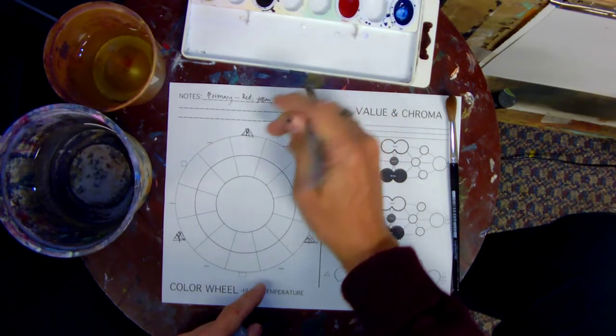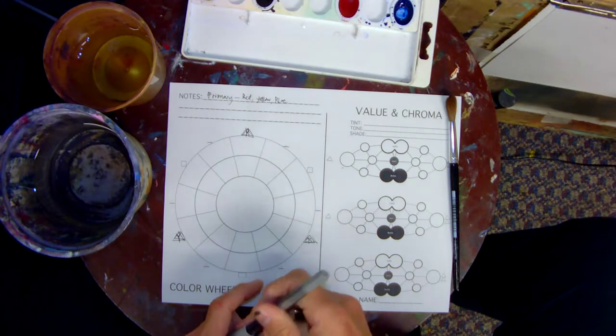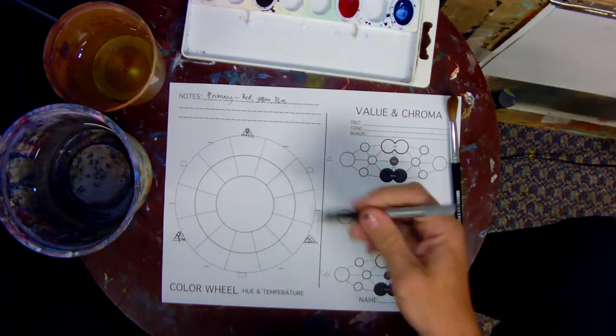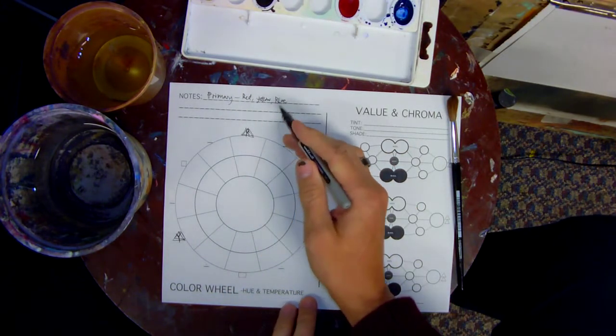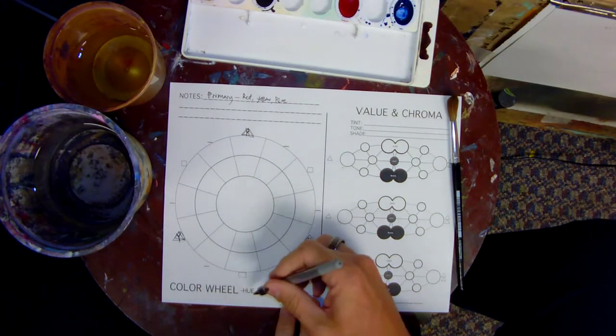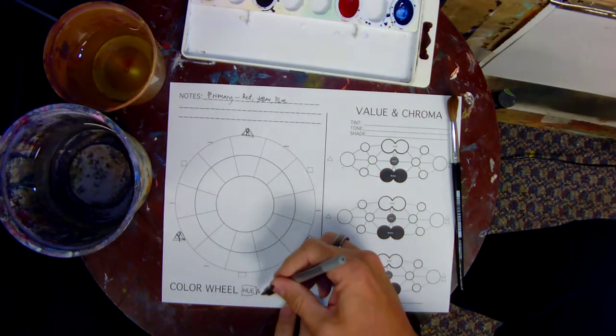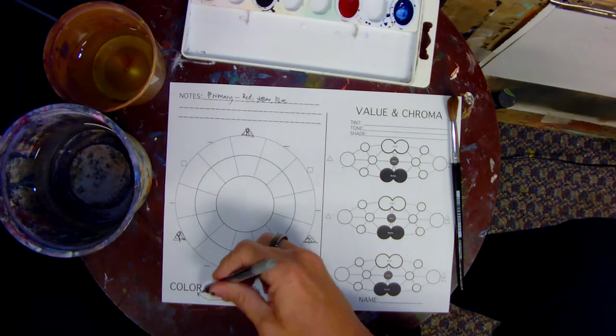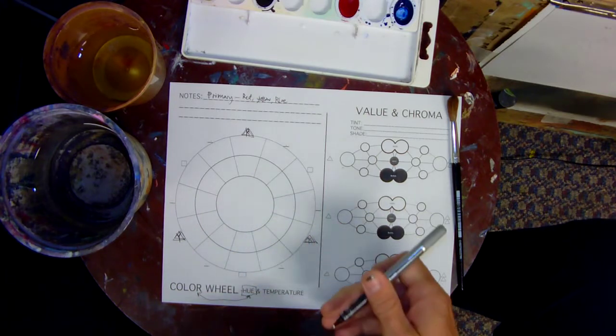And I would encourage you to take notes up here if you're not familiar with some of these concepts. These names red, yellow, and blue are colors, and the fancy art word for that is hue. Those two things are the same. Color and hue are the same.